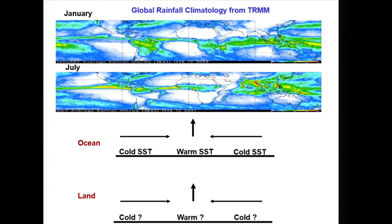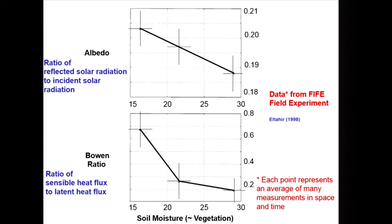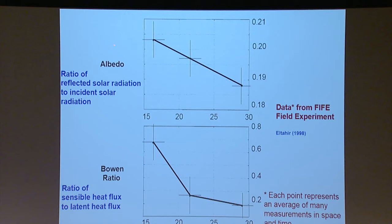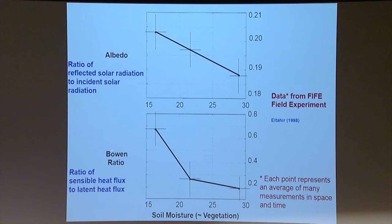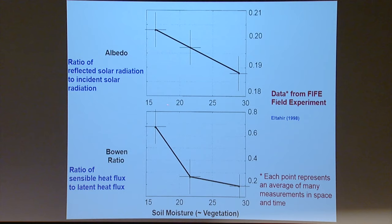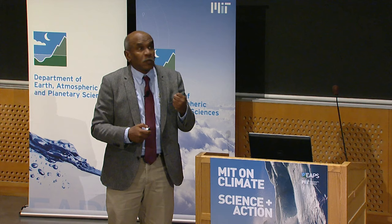To address that, I resort to observations from the FIFE experiment done over Kansas in the 1980s, looking at two fundamental variables. One is the albedo — the fraction of solar radiation that gets reflected. The other is the Bowen ratio — the ratio of sensible heat flux to latent heat flux, which is the partition of energy into sensible and latent forms. Both decline consistently with increasing soil moisture and denser vegetation.